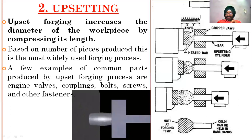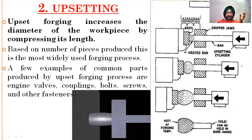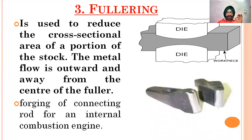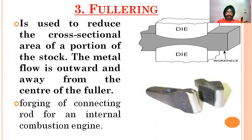There is also a gripper die. A punch is applied from the right side and blows are given to the right side, causing the material to flow. The length is reduced and diameter increases. In fullering, the cross-sectional area of a portion is reduced and metal flow is outward and away from the center of the fuller. Fullering is used in forging of connecting rods.